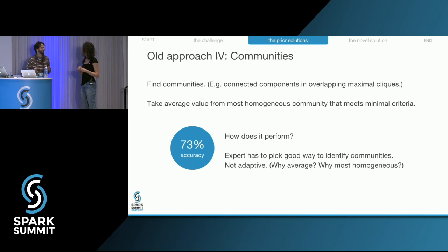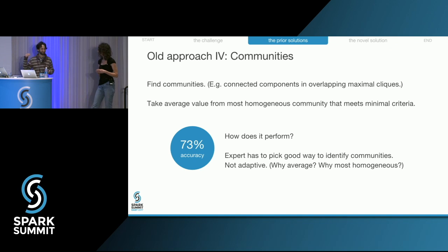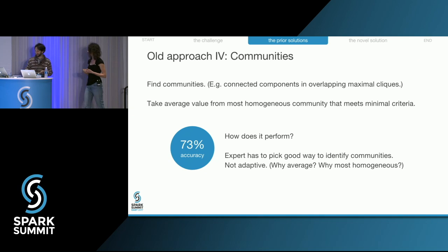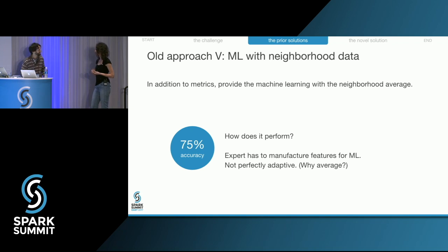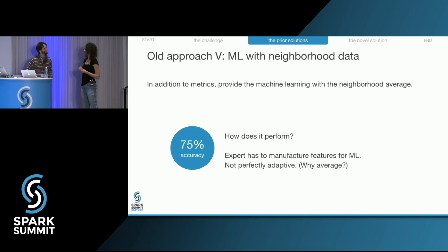Could we also use the neighborhood average as an input feature for a machine learning model — just plug it in as another input? Yes, and that gives 75% accuracy.